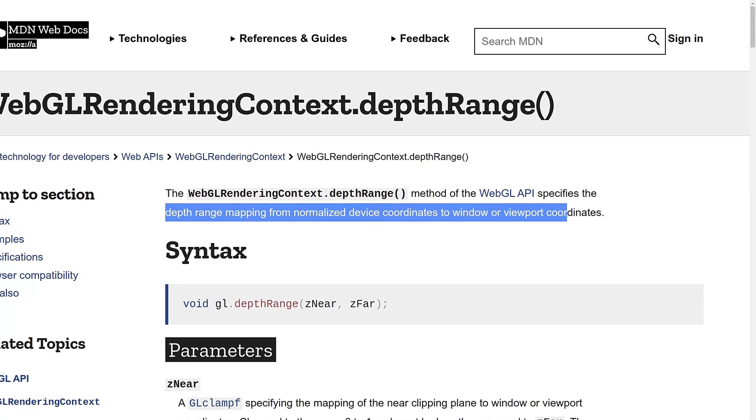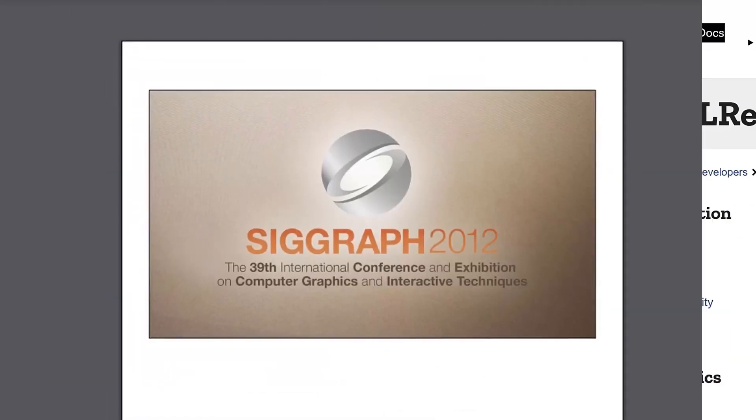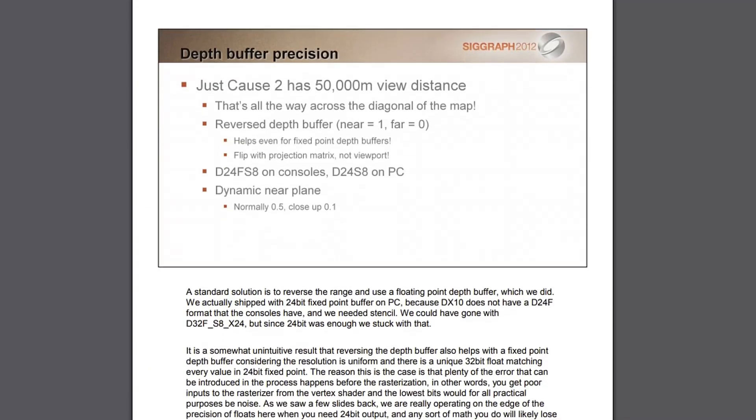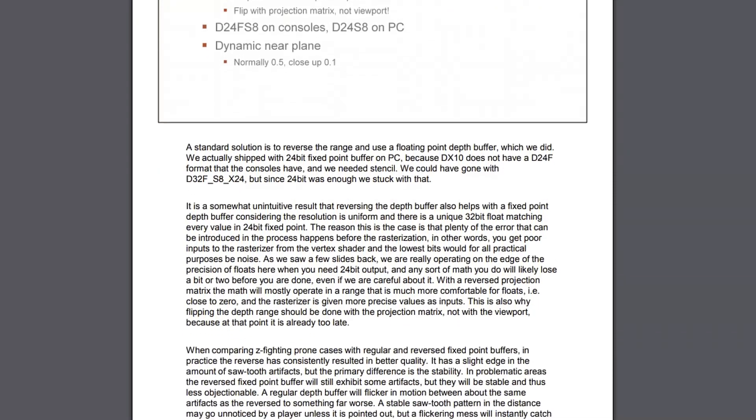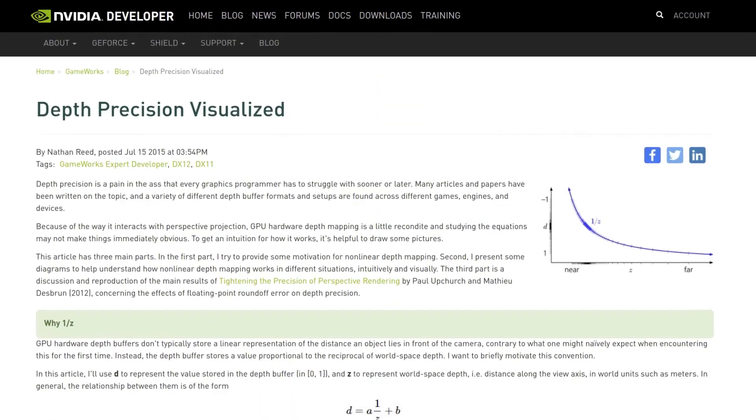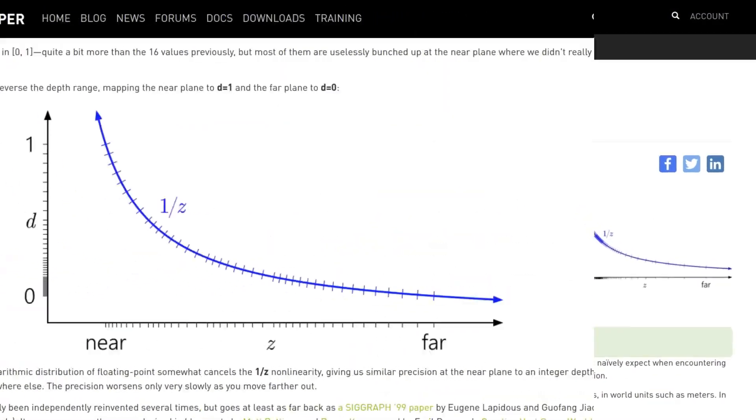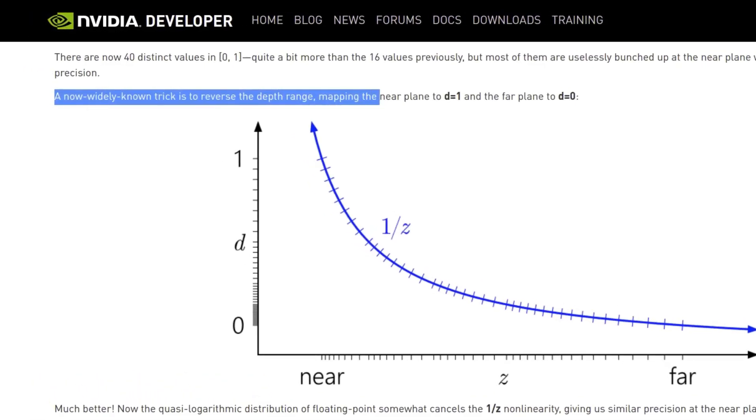Now, it can be different. In fact, flipping them is a common trick for bigger worlds to gain extra depth buffer resolution in the distance. But, I'm pretty sure this isn't exposed in 3.js, so we can ignore that safely for the purposes of this demo.